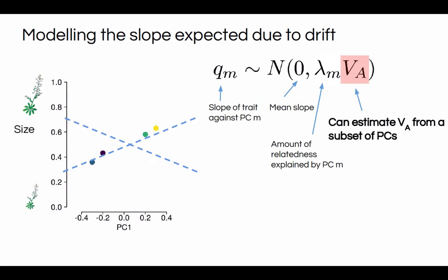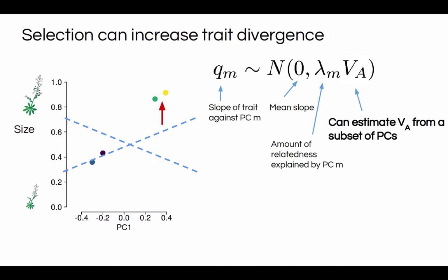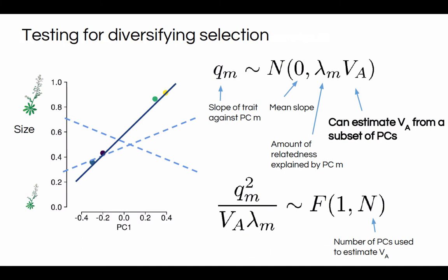If selection has acted to increase trait divergence — for example, by increasing size in one population — we expect this to increase the slope of the correlation between principal component one and that trait. This is the signature we can use to detect selection acting across this axis of relatedness. We can rearrange the equation to construct a test where we're looking for an excess slope beyond what we expect based on the amount of VA and the relatedness explained by our principal component. This is the test we've developed for detecting local adaptation in these kinds of populations.